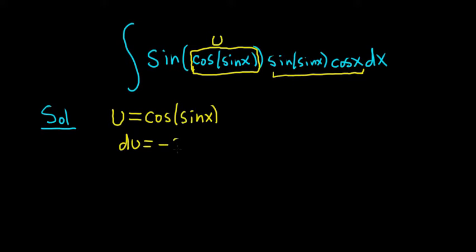So it will be negative sine of sine x times the derivative of the inside function. The inside function is sine, and its derivative is cosine x dx.